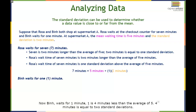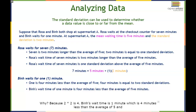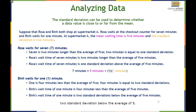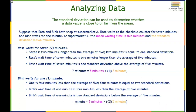So 7 equals 5 plus 1 times the standard deviation of 2. Ben waits for 1 minute, which is 4 minutes less than the average of 5. Four minutes equals 2 standard deviations, because 2 times 2 is 4. Ben's wait of 1 minute is 2 standard deviations below the average of 5. So 1 equals 5 plus negative 2 times 2.